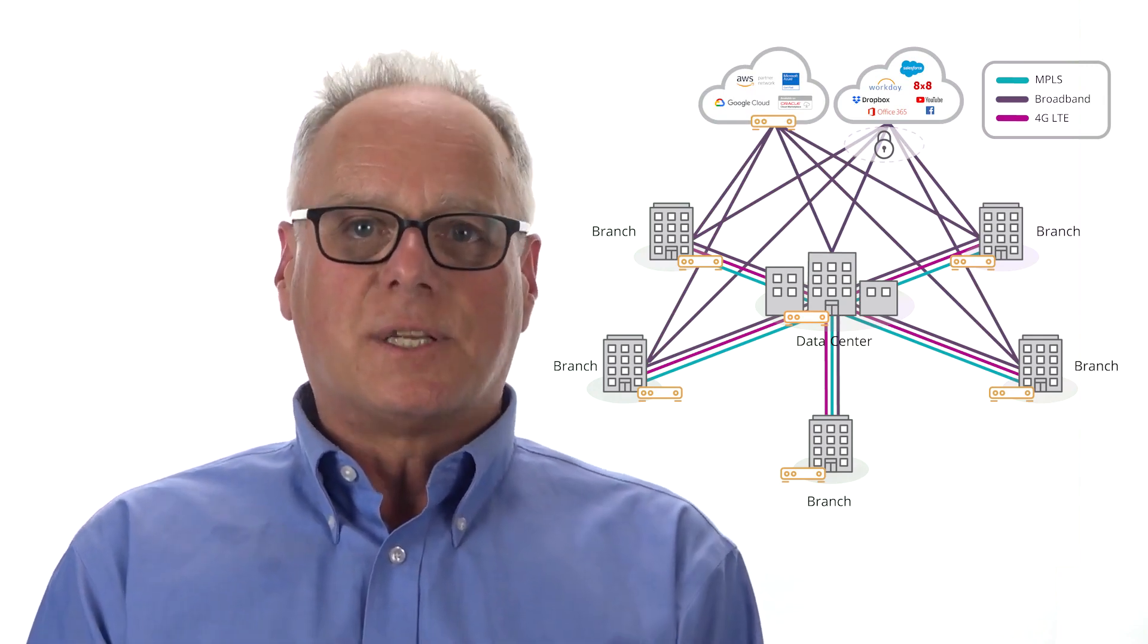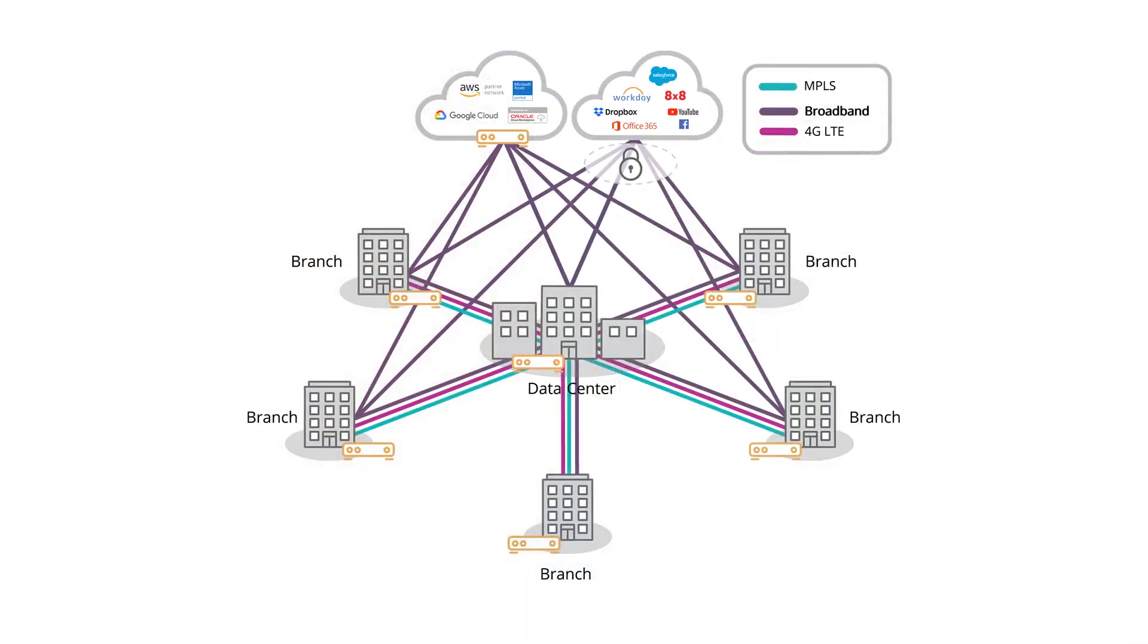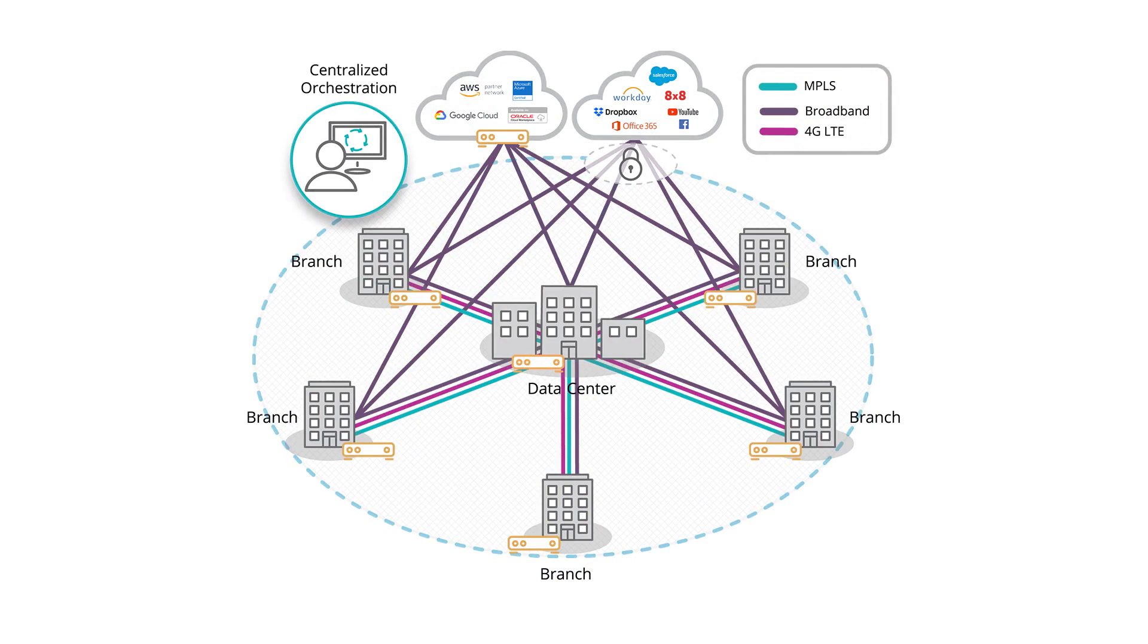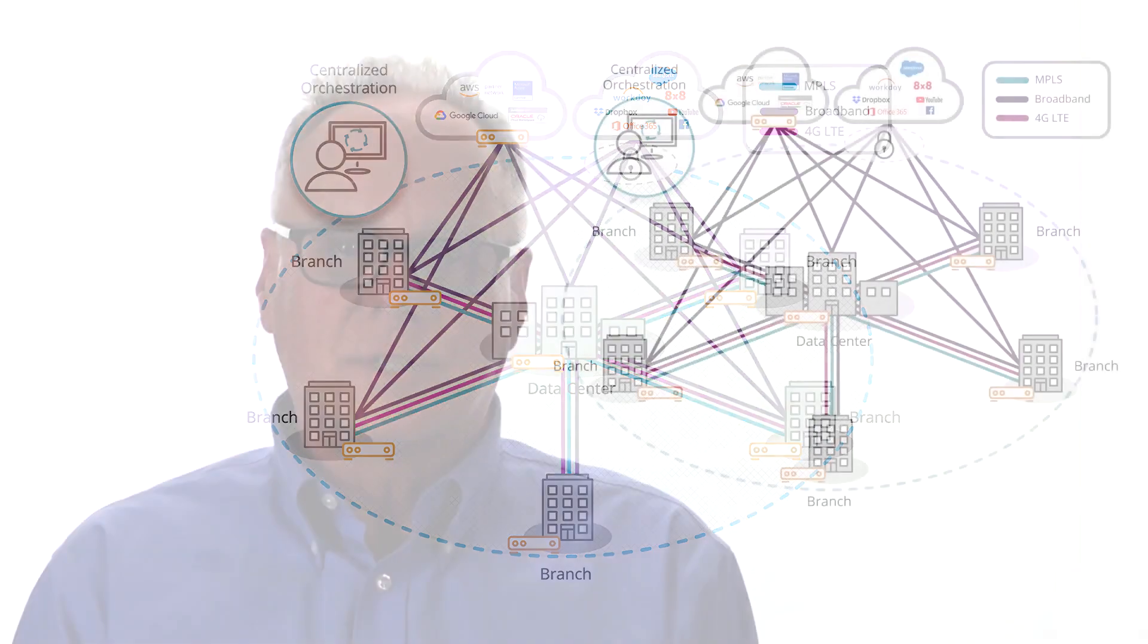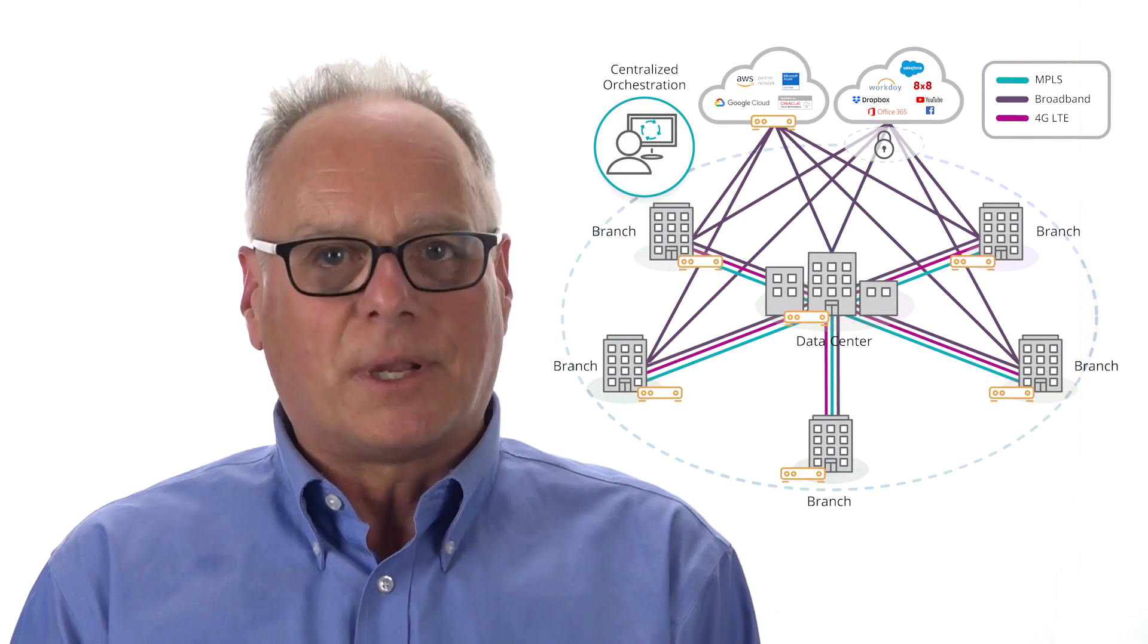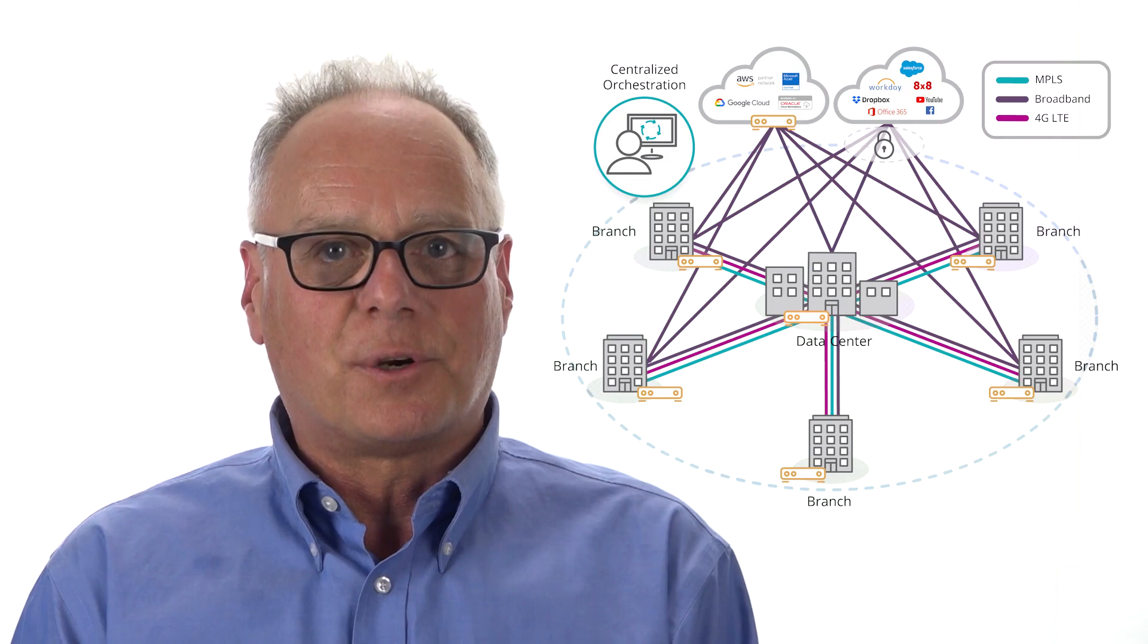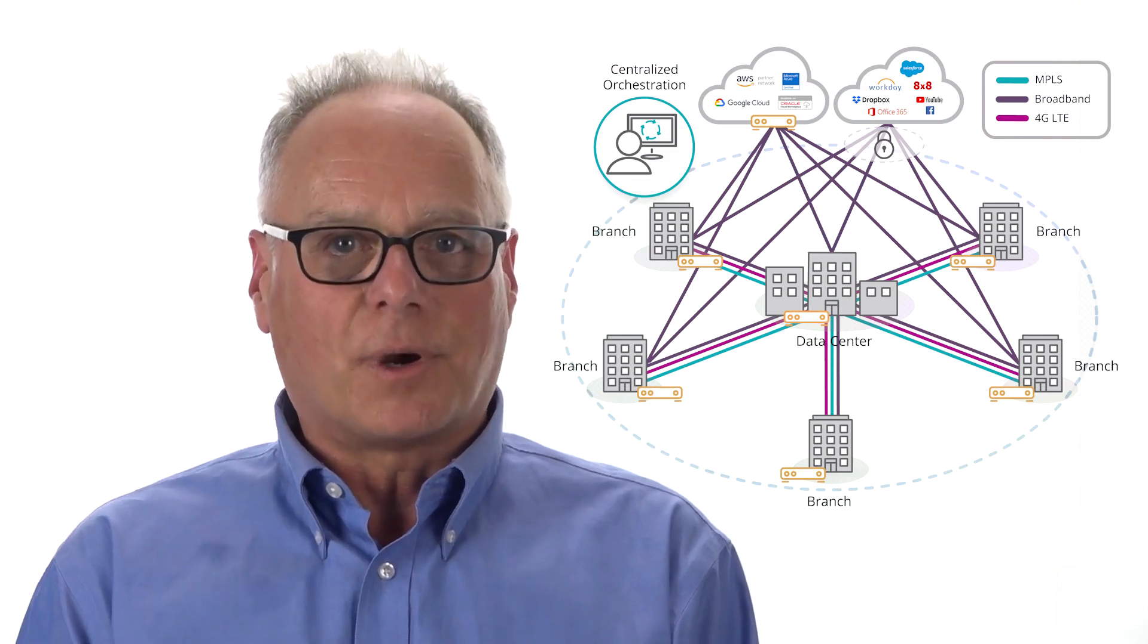Also within SD-WAN, this control function referred to as the control plane is centralized. The quality of service and security policies that dictate how an application should be delivered to the user are defined centrally and programmed automatically to hundreds or even thousands of SD-WAN appliances at branch locations. This leads to more consistent, predictable application performance as well as more consistent and improved security across the wide area network, the WAN.